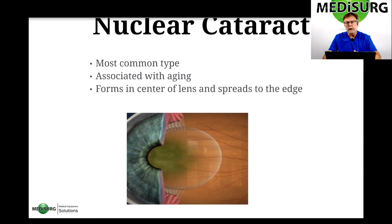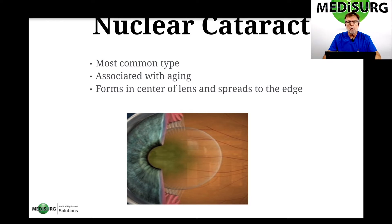If you need an analogy, a peanut M&M is a good analogy of what a lens looks like. The center of the peanut M&M is the nut — that's what we call the nucleus of the lens. Then there are multiple layers like an onion, and each of those layers form what is called the cortex. The outer shell, like the candy shell on a peanut M&M, is called the capsule on the lens.